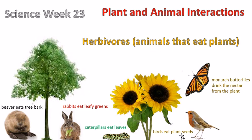Remember in the last picture where the anther and the pistil have this transfer of pollination and it makes seeds? Well, the birds eat those seeds that fall from the plants.